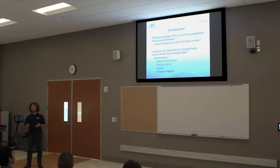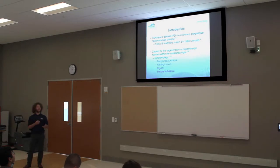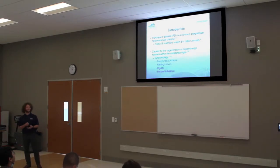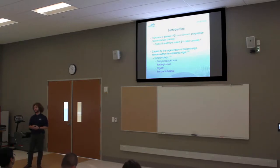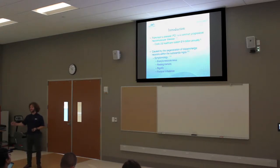When the dopamine cells start to degenerate, you start to get the cardinal symptoms of Parkinson's disease, which are bradykinesia or akinesia — a slowing of movement or lack thereof. Resting tremors occur when the individual is not consciously using a limb and you might notice it start to shake a little bit.